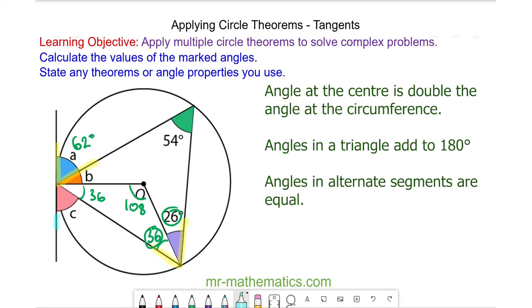We can also use the alternate segment theorem to work out angle c because it is equal to the 54 degree angle. And finally we can work out angle b because of angles on a straight line with a, b, and c. So angle b will be 28 degrees.